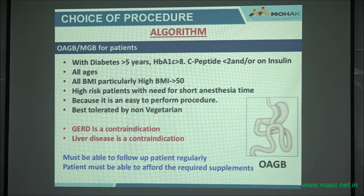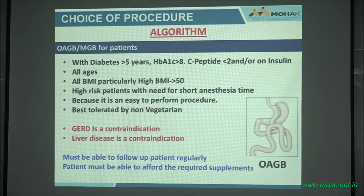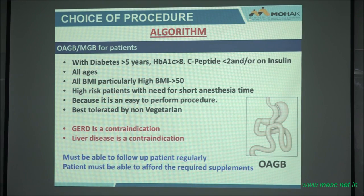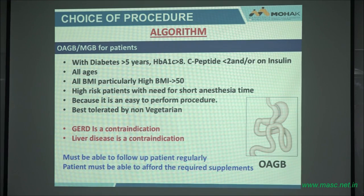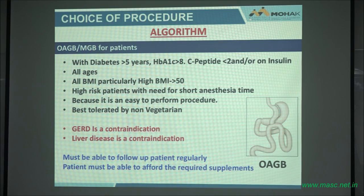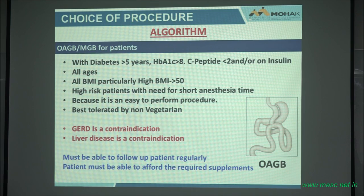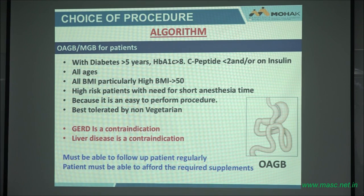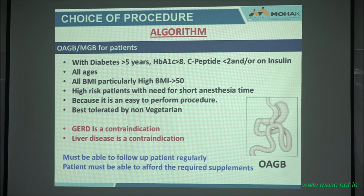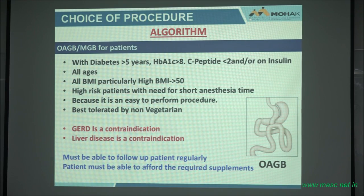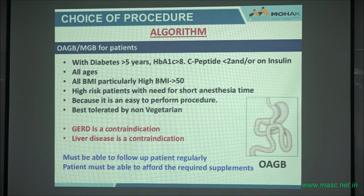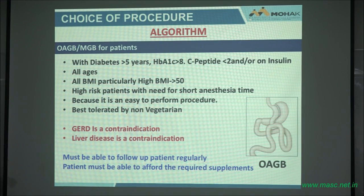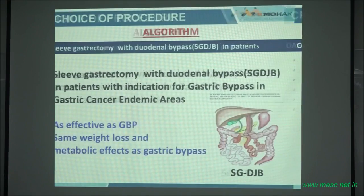They will end up in some hospital, be mistaken for dying from alcohol disease, and die in liver failure. So you must be able to follow the patient. Number two — the patient must be able to take the supplements. There are vitamins and iron you recommend. You cannot give this surgery to a poor patient who cannot buy the vitamins and then turn around and blame the patient for protein malnutrition when the supplements cost 4,000 rupees that many cannot afford.